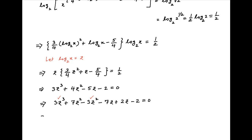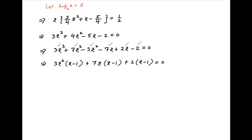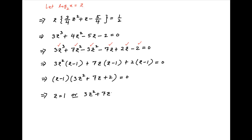Combining 3z cubed and minus 3z squared we get 3z squared times in brackets z minus 1. Combining 7z squared and minus 7z we get plus 7z times in brackets z minus 1. And finally combining 2z minus 2 we get plus 2 times z minus 1, equals 0. This implies that z minus 1 times in brackets 3z squared plus 7z plus 2 is equal to 0. Therefore either z equals 1 or 3z squared plus 7z plus 2 equals 0.